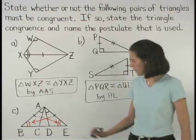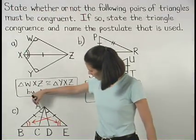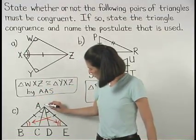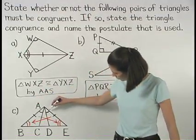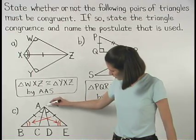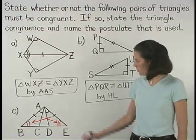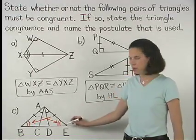Note that we now have two angles in the included side of one triangle congruent to two angles in the included side of a second triangle. So these triangles are congruent by angle side angle.